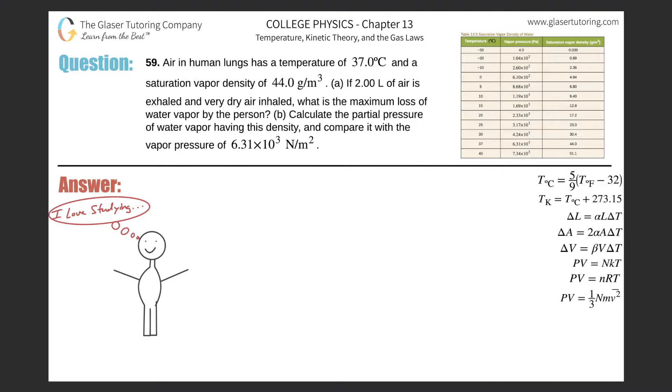Number 59: Air in human lungs has a temperature of 37 degrees Celsius and a saturation vapor density of 44 grams per cubic meter. Letter A: If two liters of air is exhaled and very dry air inhaled, what is the maximum loss of water vapor by the person?